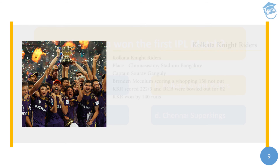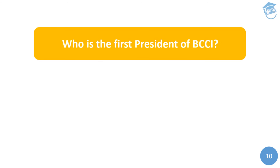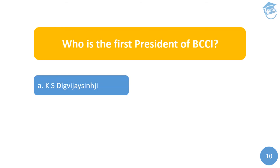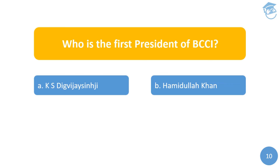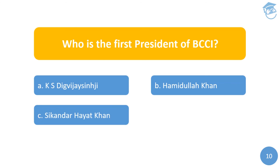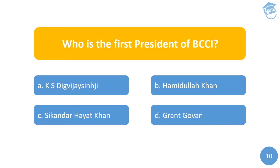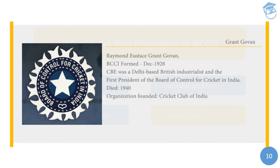The last question: who is the first president of BCCI? Your options are: A) Kumar Shri Digvijay Singh, B) Hamidullah Khan, C) Sikandar Hayat Khan, or D) Grant Govan. The answer is D) Grant Govan. BCCI was formed in the year 1928, and Grant Govan, a businessman and a patron of cricket from the United Province, was made the first president of BCCI.